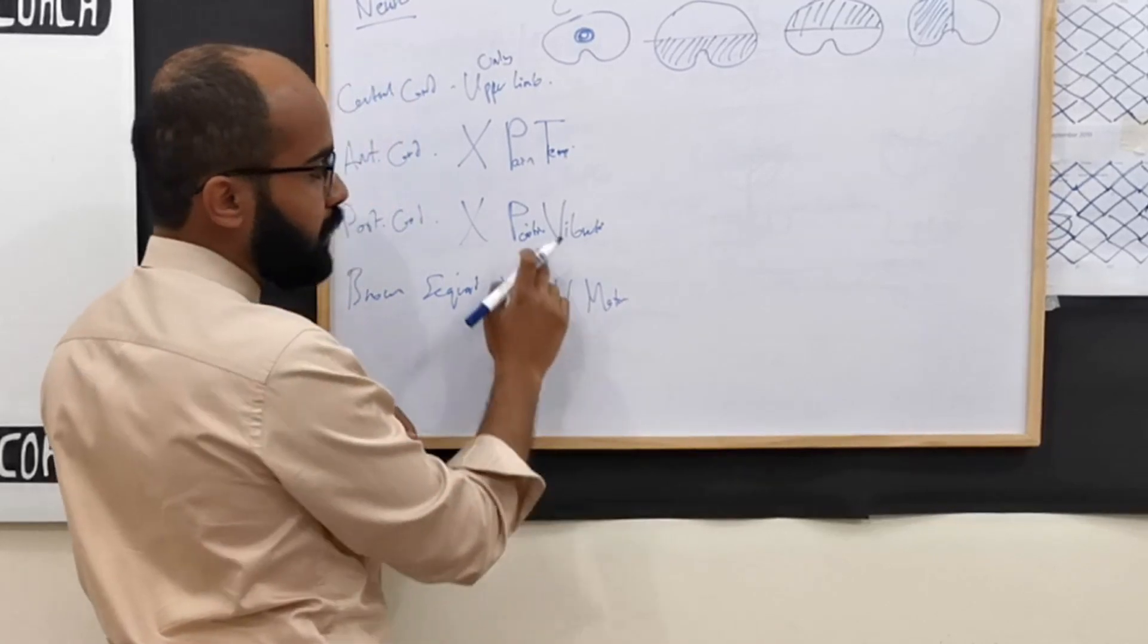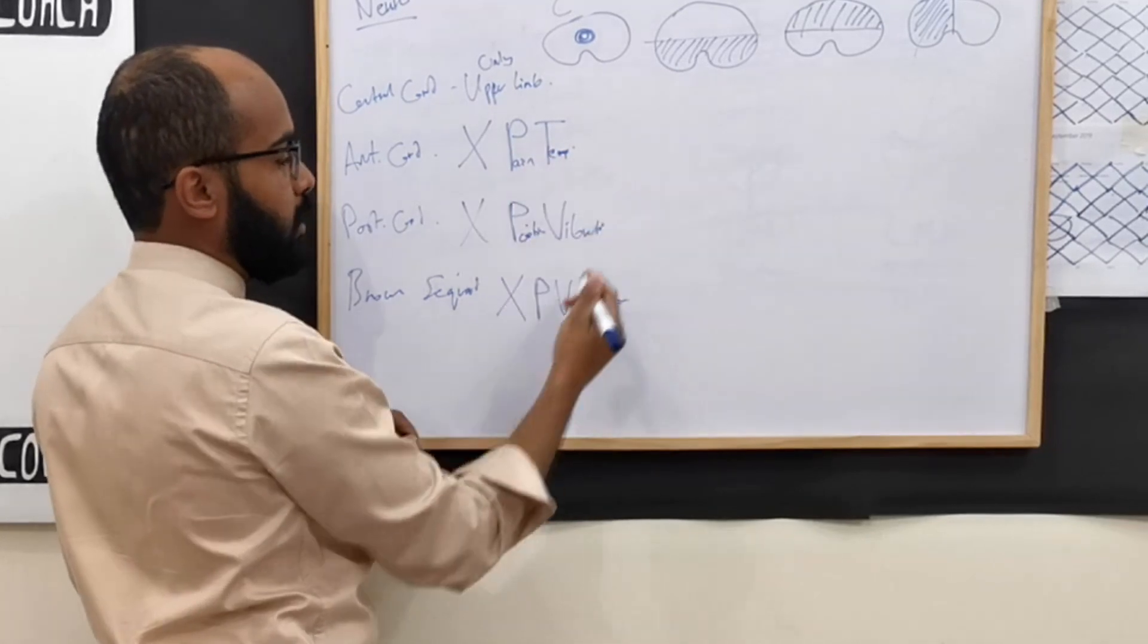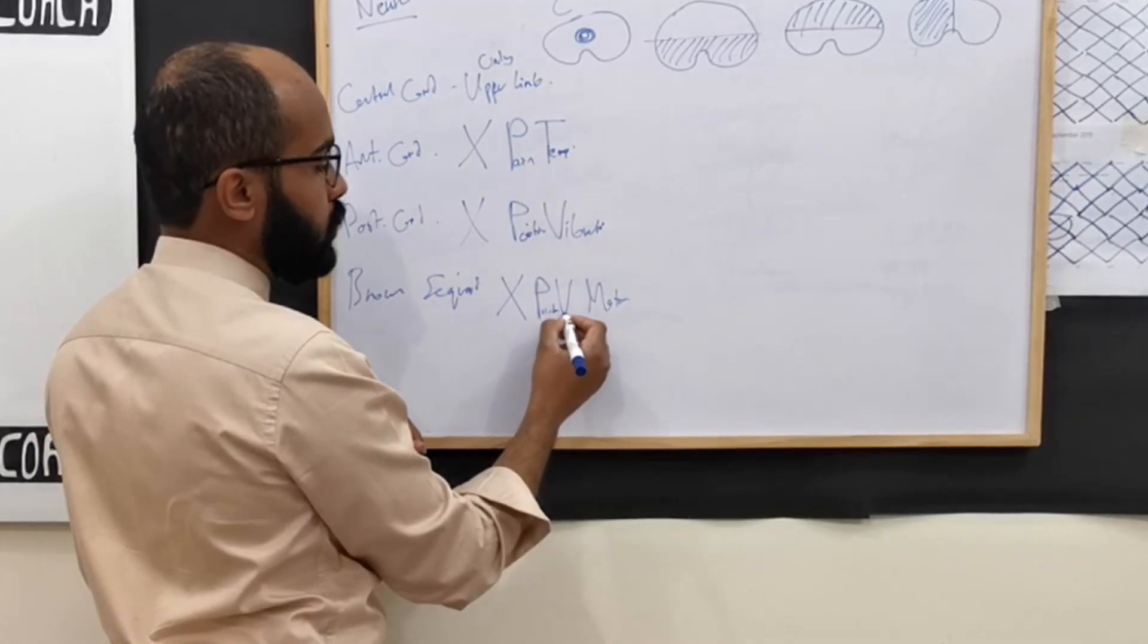Now, because we said P V, it's going to be position and vibration. Remember, P and V together means position and vibration. P and T together means pain and temperature. So position and vibration.